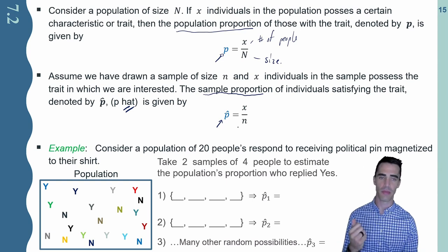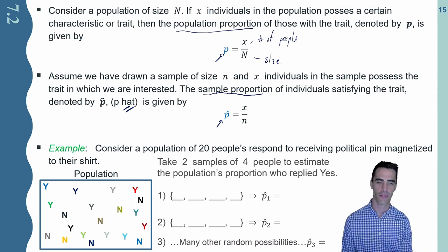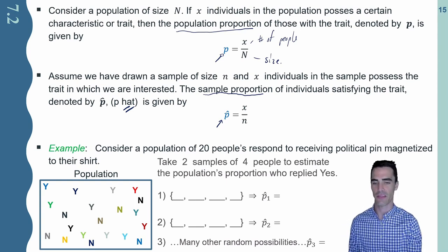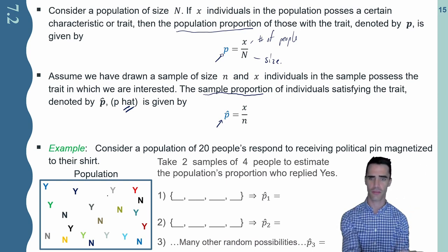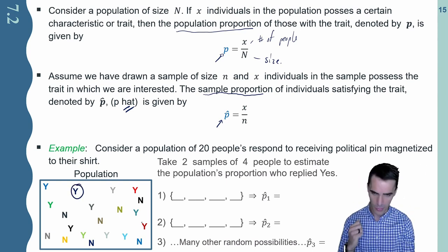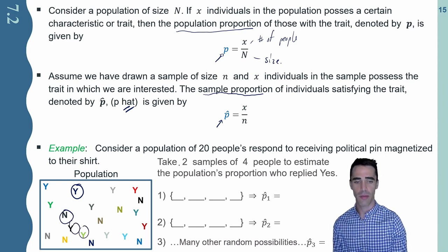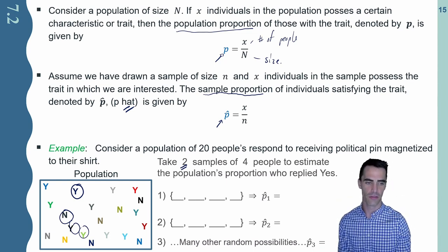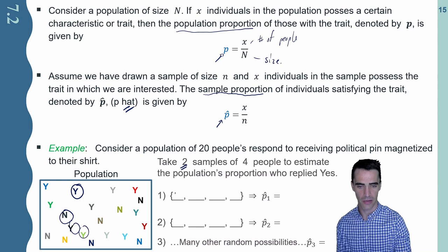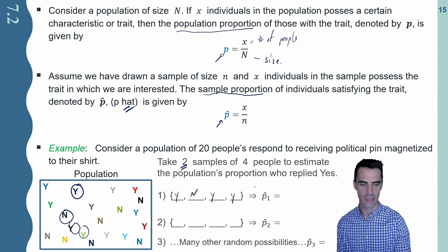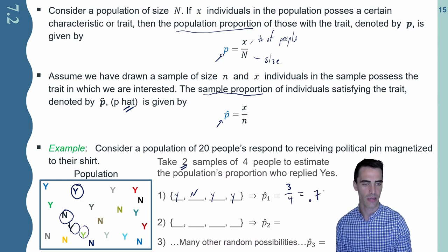Let's get a feel for what we mean by p-hat being completely a random variable. Consider a population of 20 people's response to receiving a political pin magnetized to their shirt. Some people say yes, free stuff — count me in. Others say get away from me, no thank you. Say I take a sample of four people: I got yes, no, yes, yes — three out of four people said yes. As a proportion, that's 0.75 or 75%.